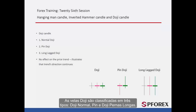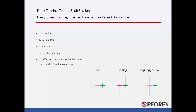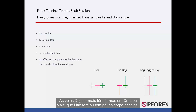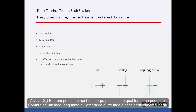Doji Candles are classified into three types: Normal, Pin, and Long Leg Doji. Normal Doji Candles have a cross or plus shape that may have no or tiny main body.